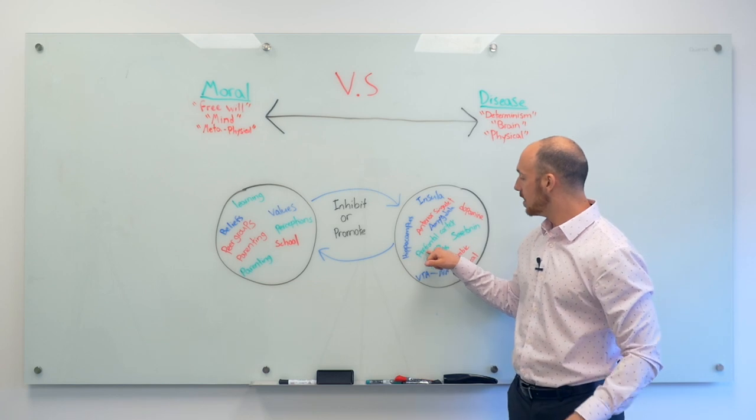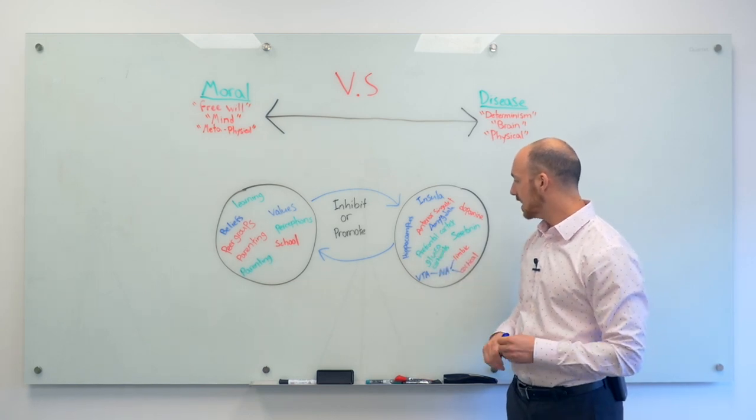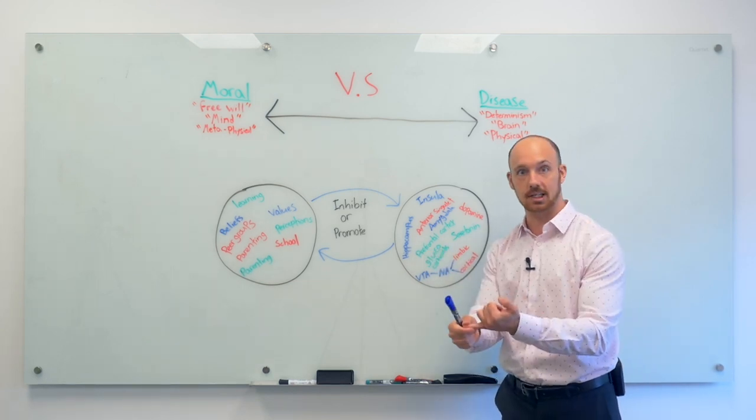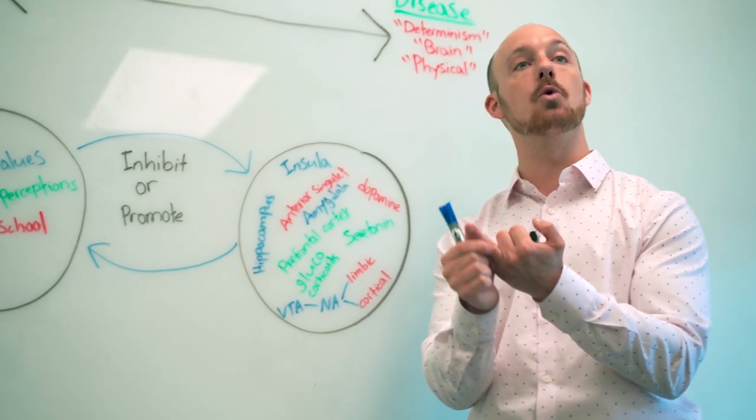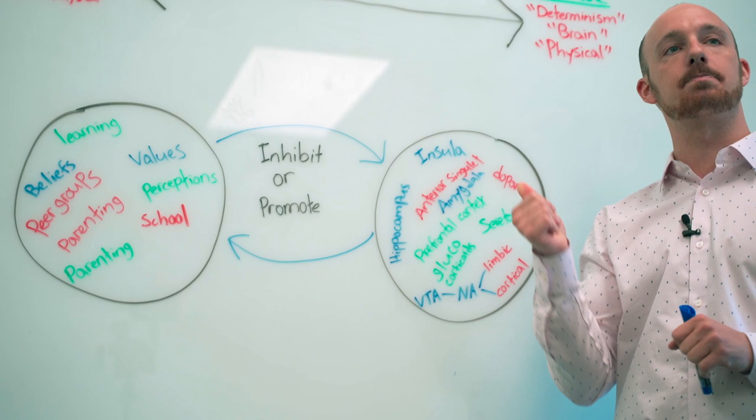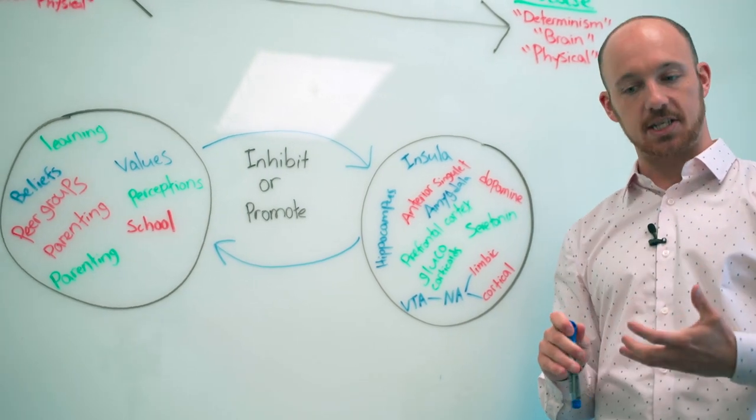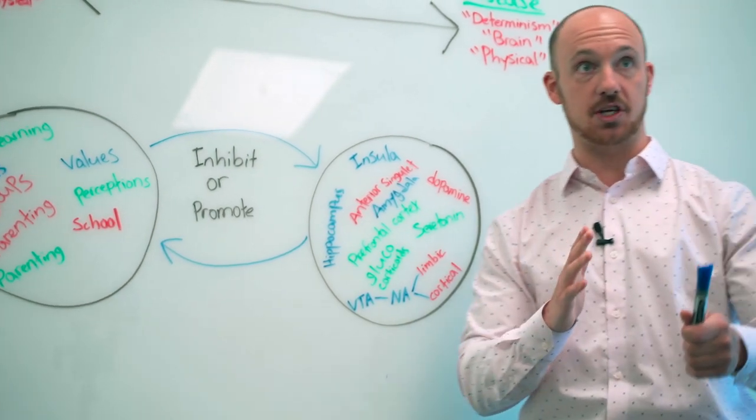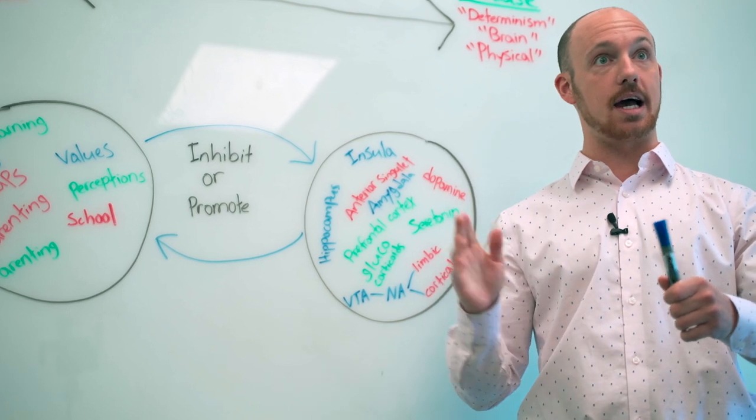Now here's the problem with the prefrontal cortex: because it's so calorically expensive and it's so new and it's so complicated, what happens is it's the first place to be shut off when there's a significant emotional reaction. So if you're scared and your emotions go offside, or you have an event coming up that you're nervous for, what's going to happen...